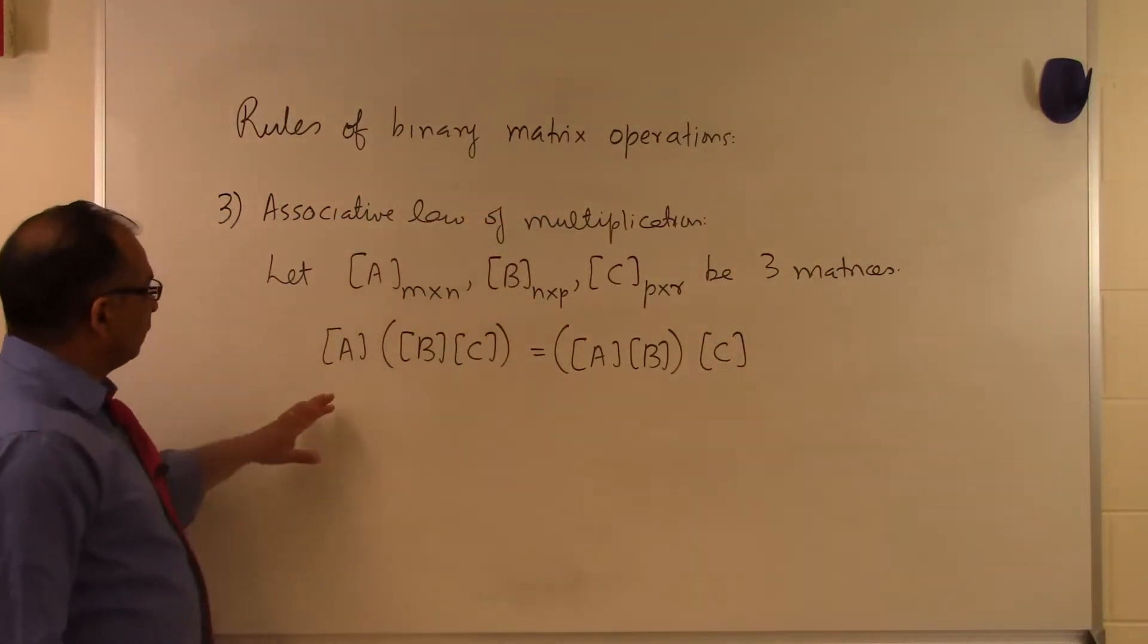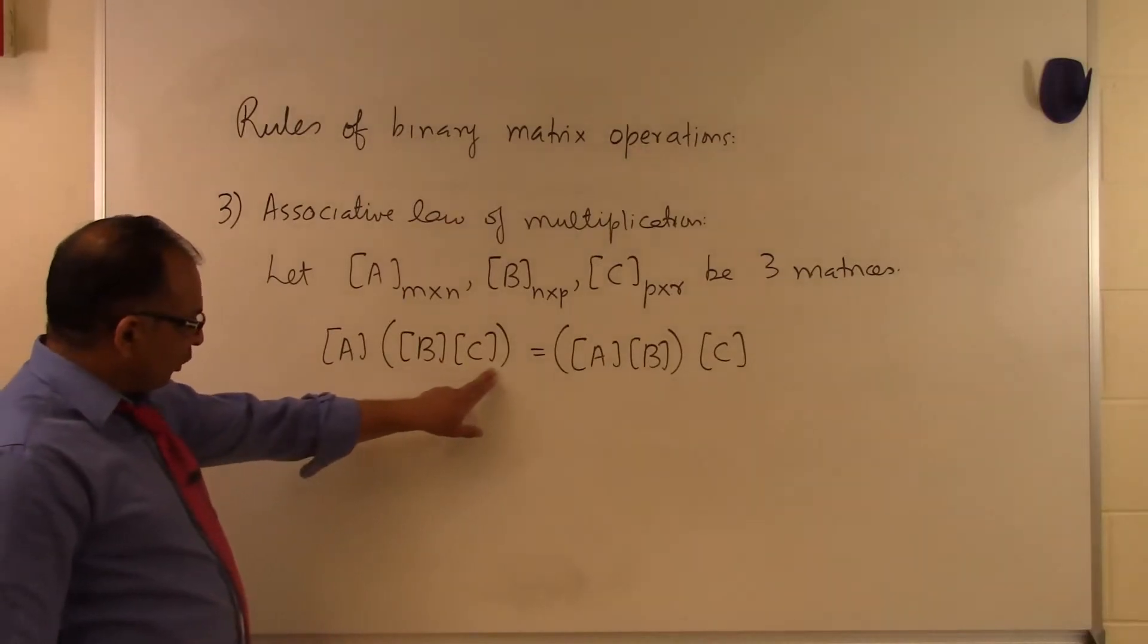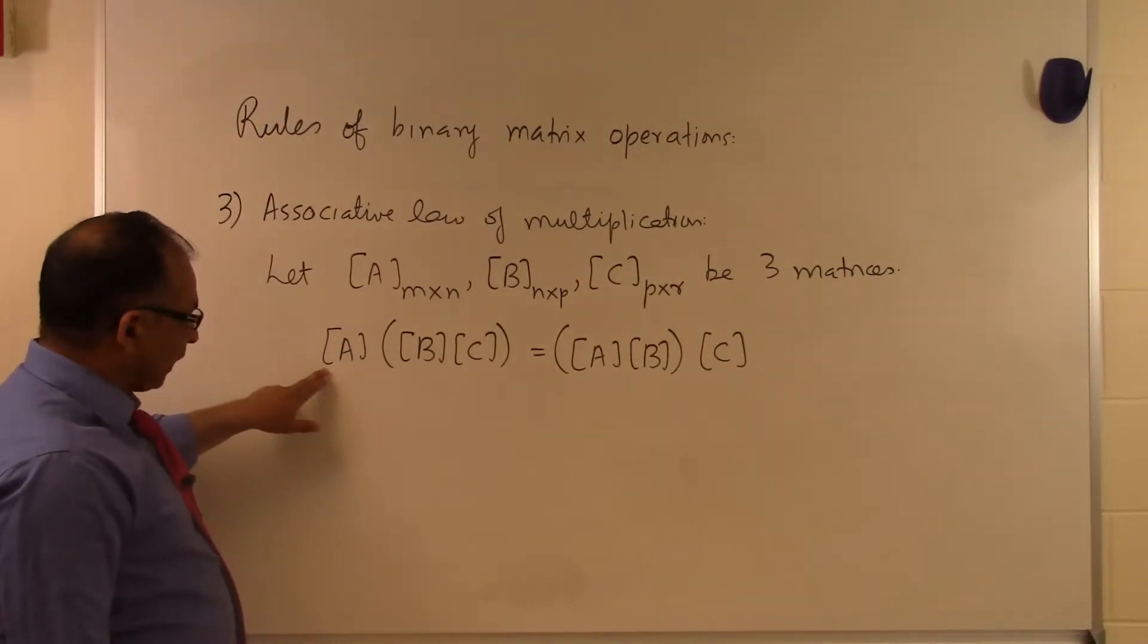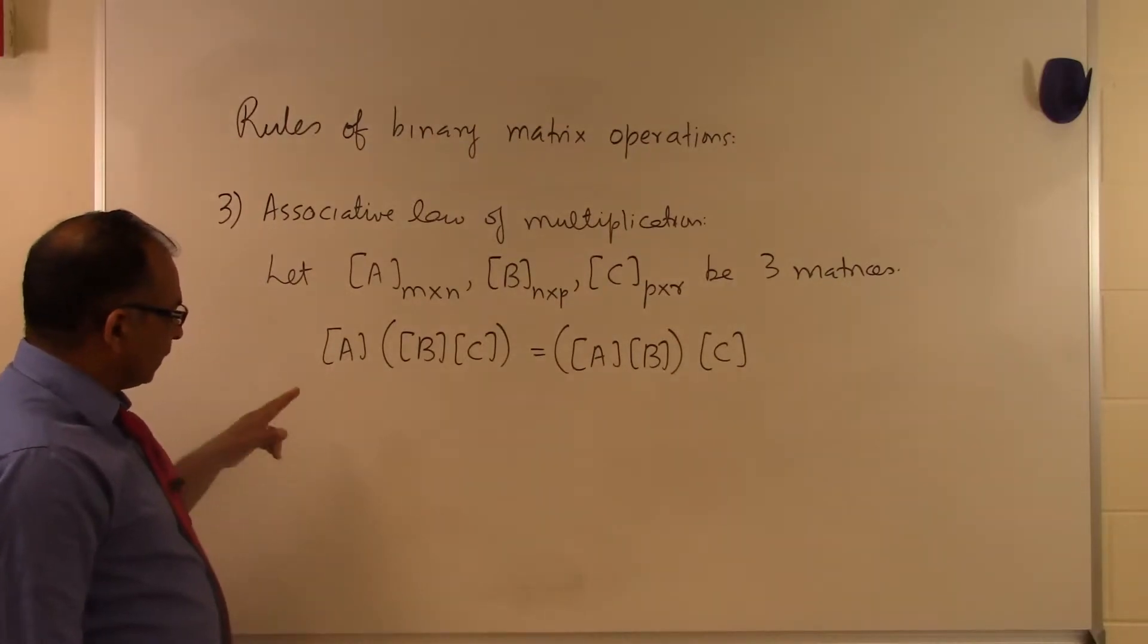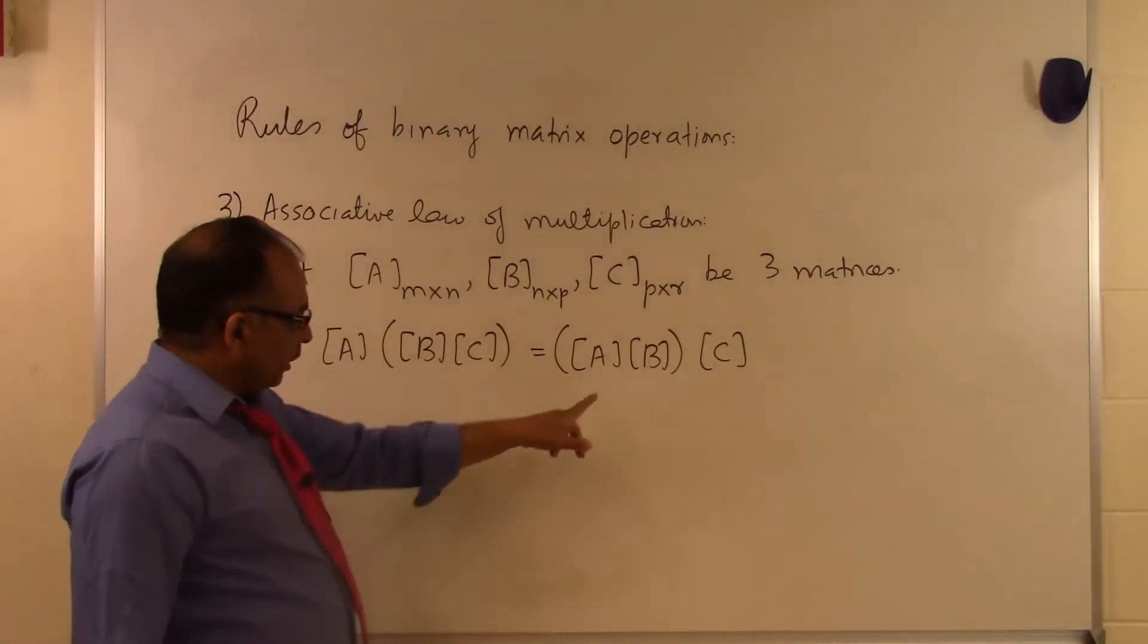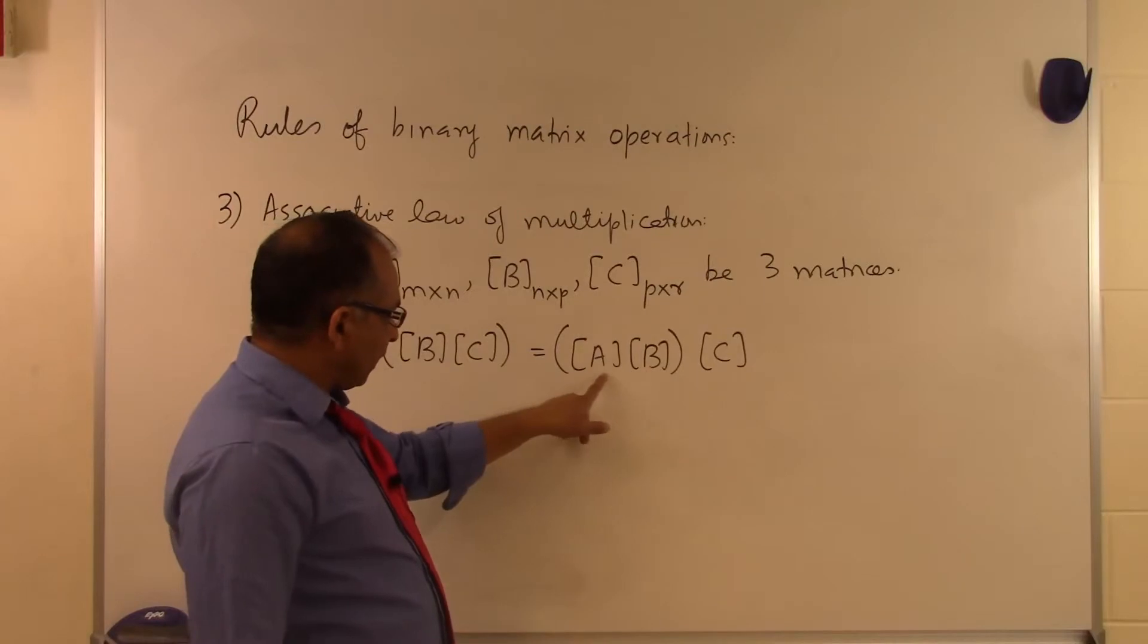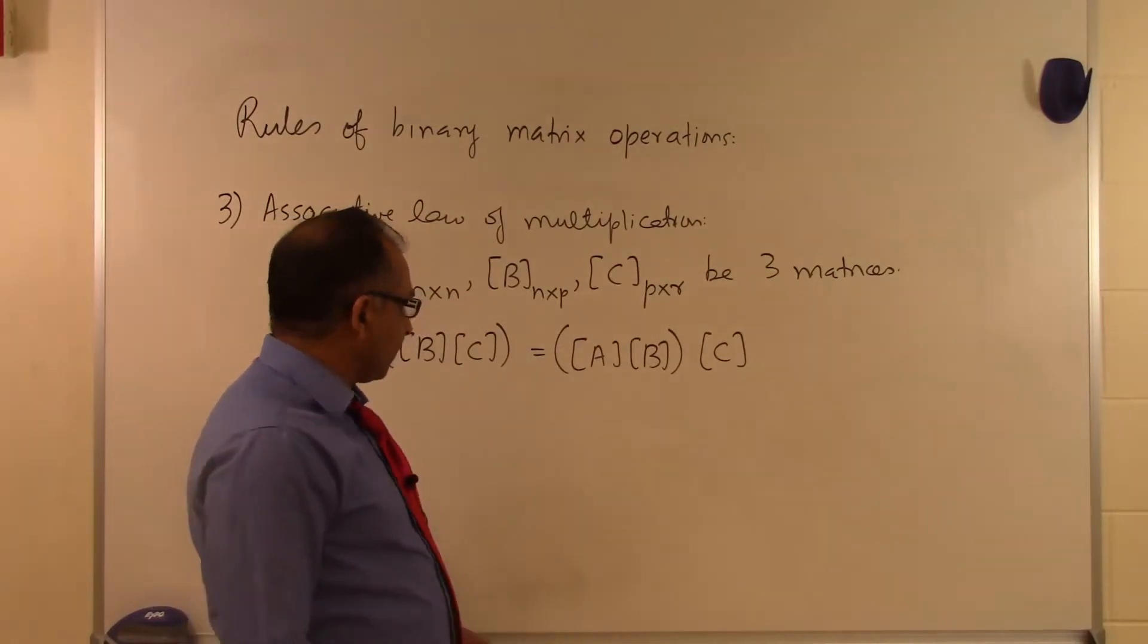So if you look at the associative law of multiplication saying that let me go ahead and do the B times C first and then I will multiply it to A. And you will find out that it will turn out with the same matrix as if you were going to multiply B by A and then multiply it by C.